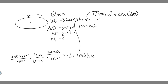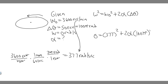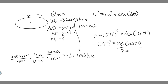Now we have everything in the correct units: omega final is 0 radians per second, omega zero is 377 radians per second, and delta theta is 100 pi radians. Plugging into the equation: 0 squared equals 377 squared plus 2 times alpha times 100 pi. Moving 377 squared to the other side gives minus 377 squared equals 2 times alpha times 100 pi.